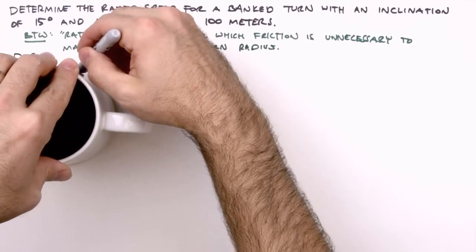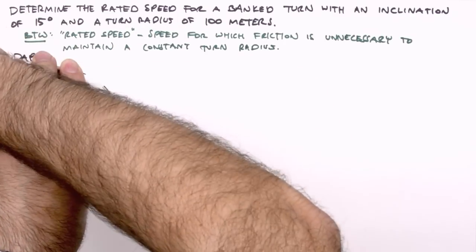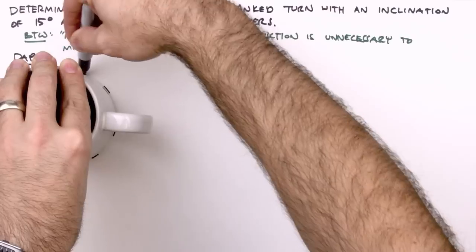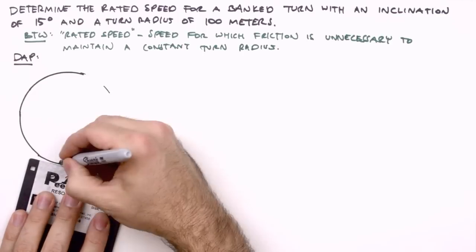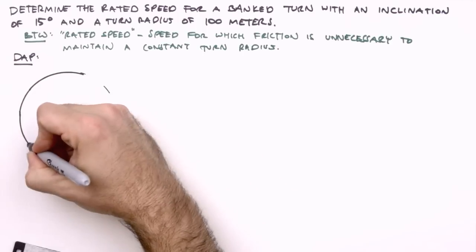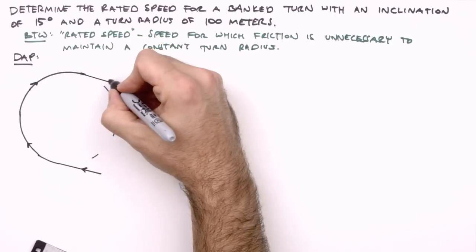Our picture will show the turn as viewed from above. We use our coffee mug here to make sure it looks nice and circular. Why is our turn circular? Because the given radius is constant. To make this a little more realistic, we'll depict our vehicle entering this turn from a straightaway, and exiting the turn to a straightaway.